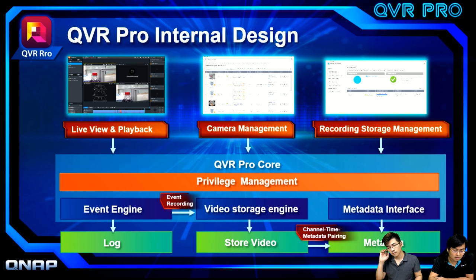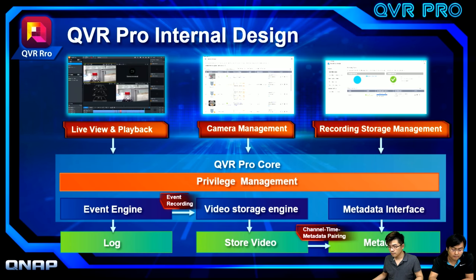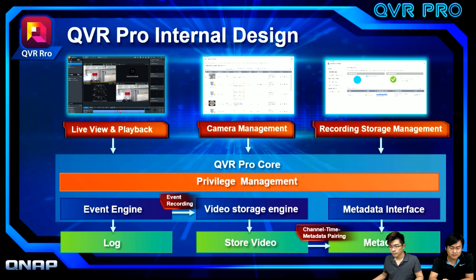This diagram shows the internal design of QVR Pro. The QVR Pro kernel contains privilege management, an event engine, a video recording engine, and a metadata interface. The recording storage management lets users configure recording storage. When the event engine receives an event, it triggers the recording engine to start event recording. The metadata interface pairs the channel and timestamp to record into the metadata vault. Users can then use QVR Pro Client to view live footage, do playback, search metadata, and perform backups.